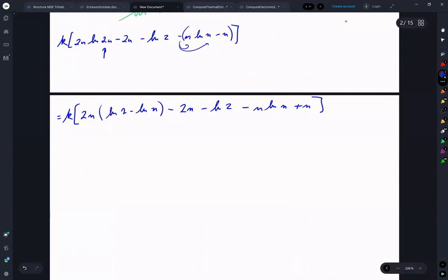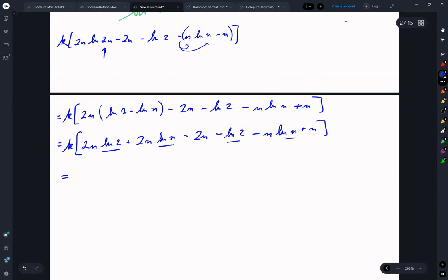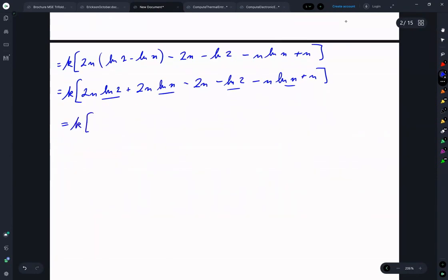Expanding, K, 2N natural log 2 plus 2N natural log N minus 2N minus natural log 2 minus N natural log N plus N. Collecting on the natural logs, we get K, 2N minus 1 natural log of 2 plus 2N minus N natural log of N minus N.